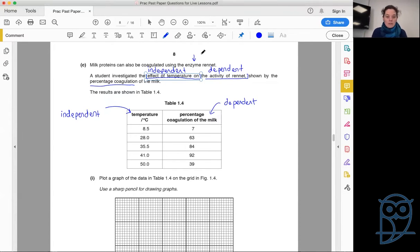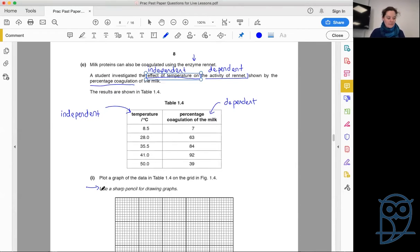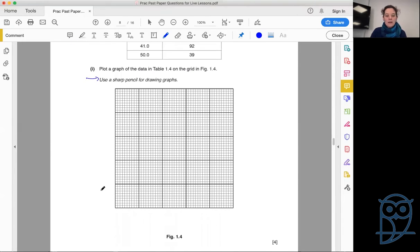Plot a graph of the data in Table 1.4 on the grid in Figure 1.4. They give you a nice reminder: use a sharp pencil for drawing graphs. If your pencil is not sharp you can lose marks. The marks for these graphs are compound marks - you have to do certain things to get one mark, then another list of things to get one more mark. Only four marks for this entire graph.